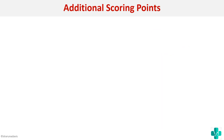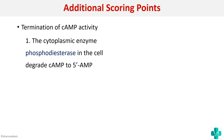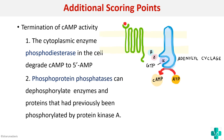As additional scoring points, you can mention the termination of cAMP activity. The cAMP has to terminate at some point, and this is brought about by the enzyme phosphodiesterase. In the presence of phosphodiesterase, cAMP is converted to 5-AMP, and thus its actions stop. Regarding the other proteins that were phosphorylated, the enzyme phosphoprotein phosphatase can dephosphorylate the enzymes that had been previously phosphorylated.